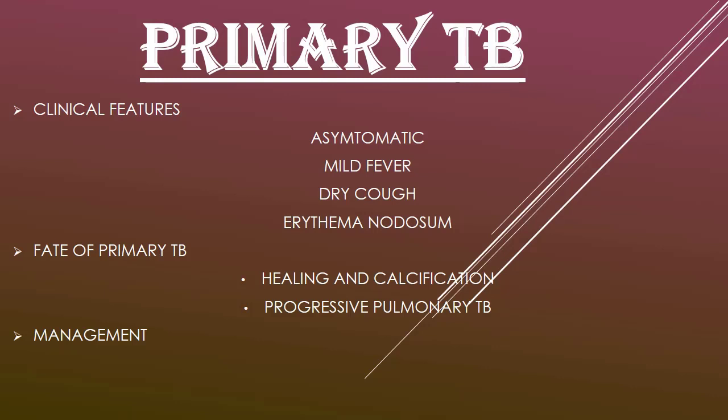Fate of primary TB — Healing and calcification: In most people, the primary infection and the associated lymph node lesion heal and calcify. Progressive pulmonary TB: In children with impaired immunity, such as those with malnutrition, the primary infection does not heal. A large lymph node may compress the bronchi causing obstruction. Progressive pulmonary TB may appear either during the initial illness or after a latent interval of weeks or months.